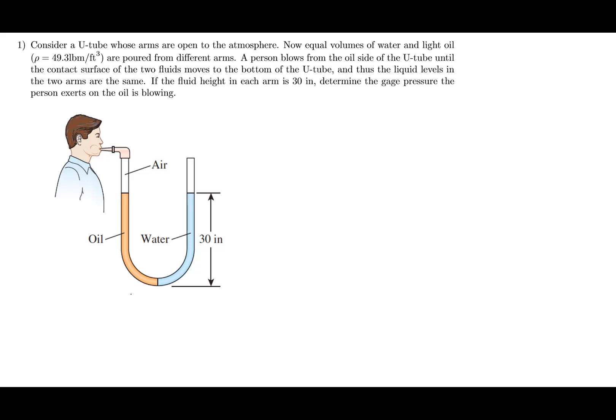In this problem, we have a U-tube. The arms are open to the atmosphere, and equal volumes of water and light oil — with the oil density given as 49.3 pound-mass per foot cubed — are poured from different arms. So we have oil in one side and water in the other side.